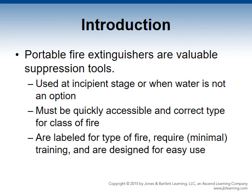Portable fire extinguishers are a valuable suppression tool. They are used at the incipient stage of a fire or on fires where water would not be effective. They must be quickly accessible and the correct type for the class of fire they're being used on. There is a fixed amount of suppression agent in each extinguisher. Rapid access prevents fire growth beyond the extinguisher's capacity to control. Using the wrong type of agent can result in ineffective suppression. The person using the extinguisher must be properly trained. Extinguishers are labeled for the type of fire they're intended for, requiring minimal training and designed for easy use.